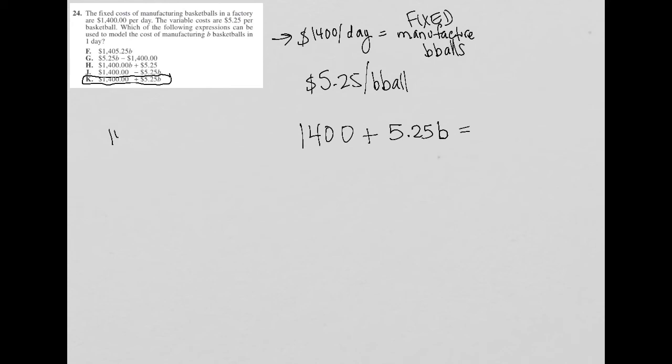You'd say, okay, I know I'm going to pay $1,400. I know I'm going to pay $5.25 times the 10 basketballs, and therefore I know I'm going to pay a total of $52.50 for those 10 basketballs. So I'm going to pay $1,400 plus $52.50 for this one day, which means I should have a total all-in cost of $1,452.50.